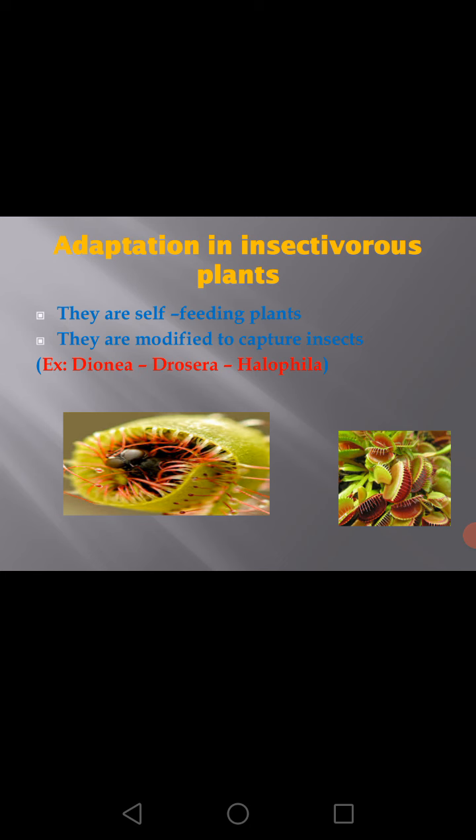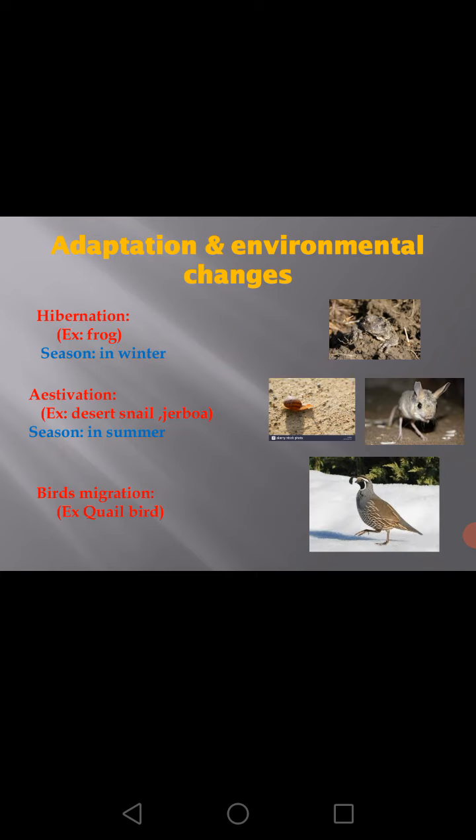But they are modified to catch insects in order to absorb nitrogenous substances from the body of insects to form proteins that their bodies need. Examples of insectivorous plants include Drosera, Dionaea, and Halophylla.